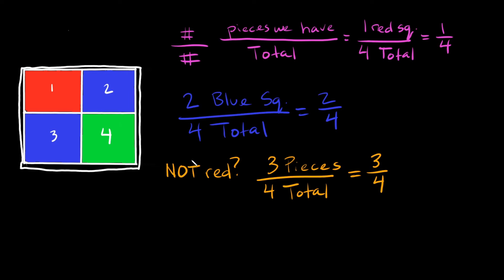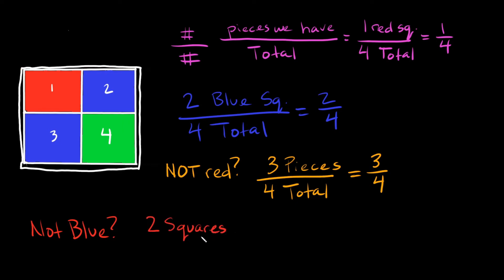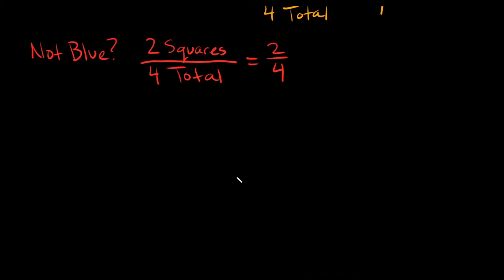What fraction of the whole square is not blue? Not blue means we have the red one and the green one — two squares that are not blue. Out of four total squares, that's two over four.